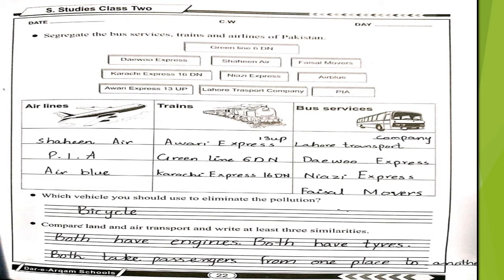Next one is trains. Awadi Express 13 Up, Green Line 6 DN, and Karachi Express 16 DN. Bus services carry the names Lahore Transport Company, Daewoo Express, Niazi Express, and Faisal Movers. The next question is which vehicle you should use to eliminate pollution, and your answer is bicycle.